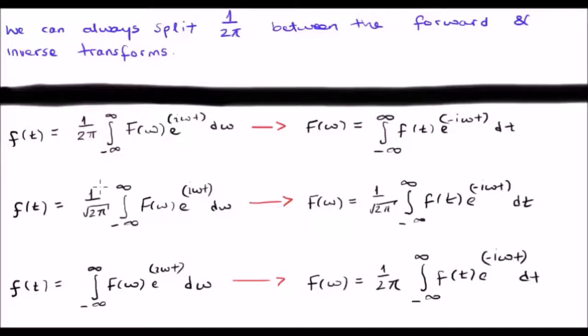We could split it up so there's a 1 over root 2 pi in both. Or what we could do is have a 1 in the forward transform and a 1 over 2 pi in the inverse transform.